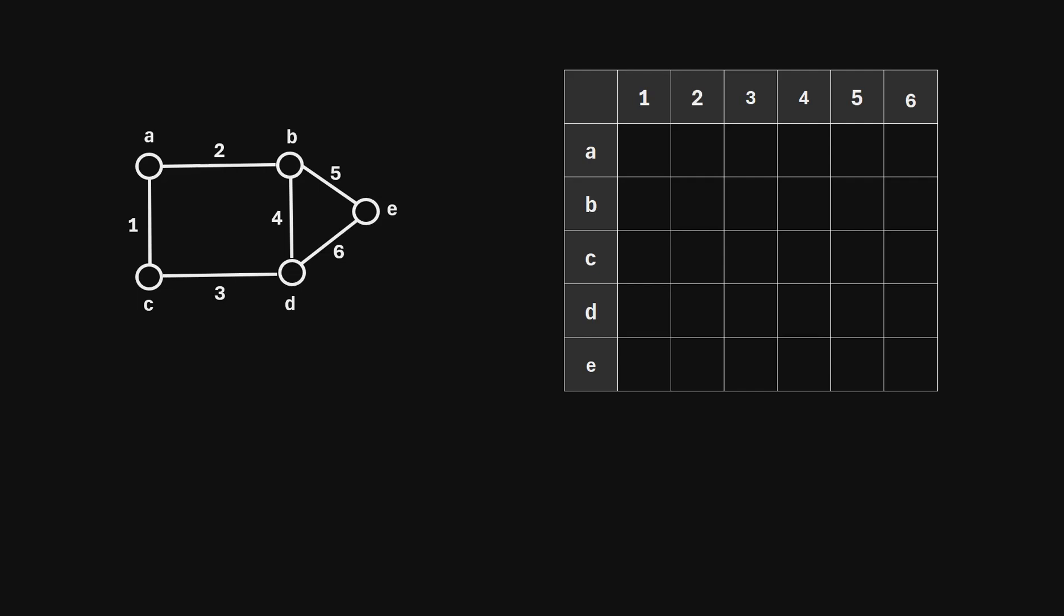In this video, I will explain how to create an incidence matrix for a graph. So let's imagine that we have this graph right here. I've labeled the vertices of the graph A, B, C, D, and E.